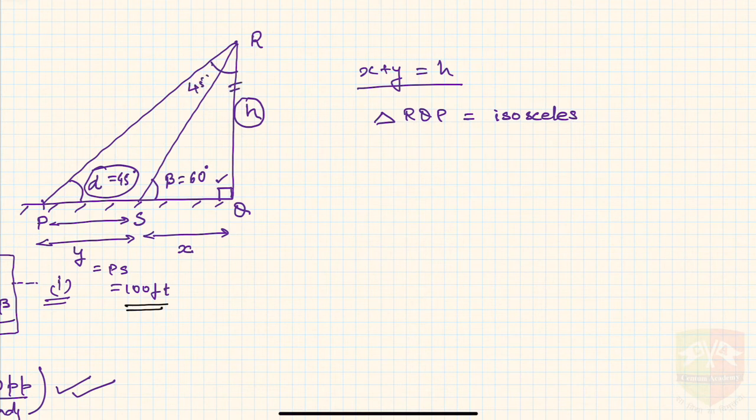Hence, this side is equal to this side. That is, PQ is equal to RQ. Hence, PQ, which is the second part of the question, is nothing but h = 236.6 feet. So both the answers are 236.6 feet.